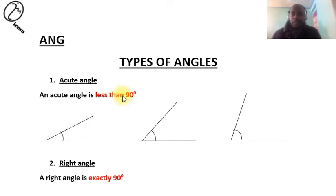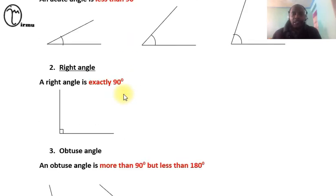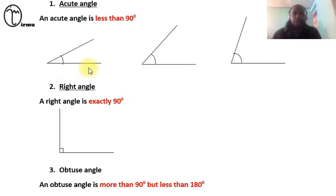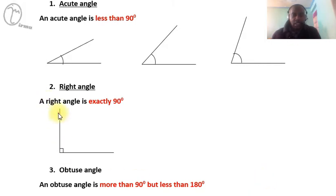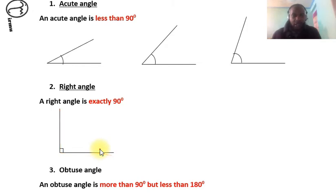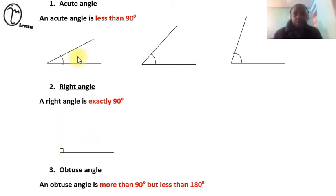First, let's look at a right angle so we can understand what an acute angle is. A right angle is an angle that is exactly 90 degrees, like this angle here. So a right angle is exactly 90 degrees.